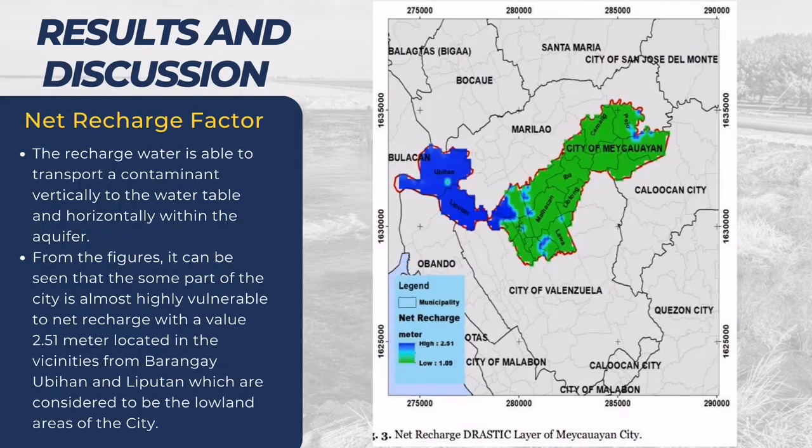For the net recharge factor, it can be seen in the figure that following the color blue in the legend, some part of the city is almost highly vulnerable to net recharge with a value of 2.51 meters. These are Barangay Ubihan and Liputan, which are also considered to be the lowland areas of the city.